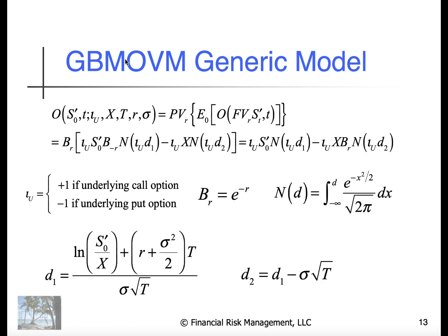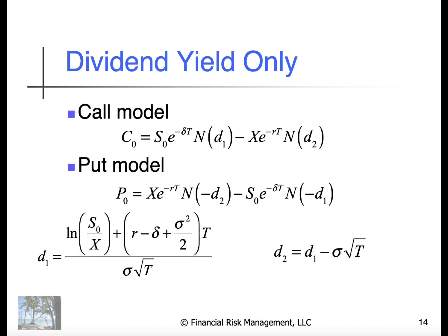The generic option valuation model under the equivalent Martingale measure method, which is a cash-flow adjusted method: the option value is simply the present value at the risk-free rate of the dividend-adjusted, grossed-up value of the stock times N(d1), minus the strike price times N(d2). If the indicator omega is plus one — a call — this is your standard dividend-adjusted Black-Scholes-Merton model. If it's minus one, it's a standard put model. These are the fundamental terms and are very easy to code up with a single function. If there's only a dividend yield, I could write it out the long way just to make the different moving parts more clear.